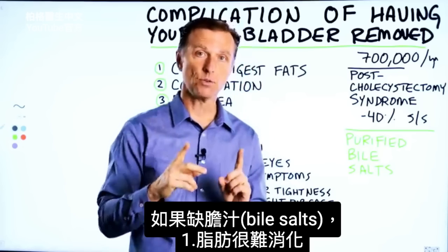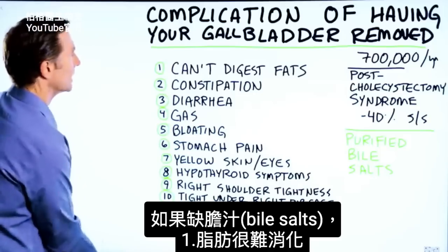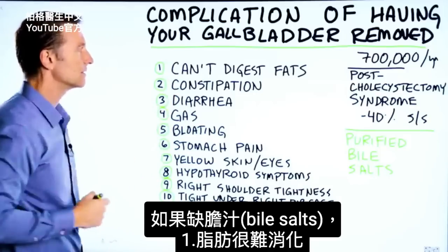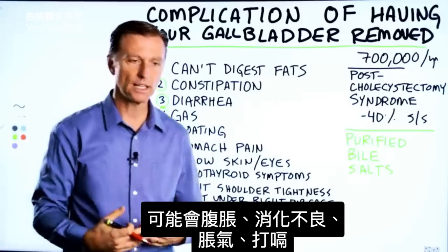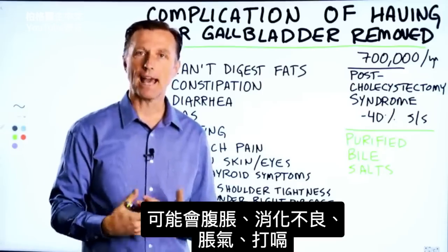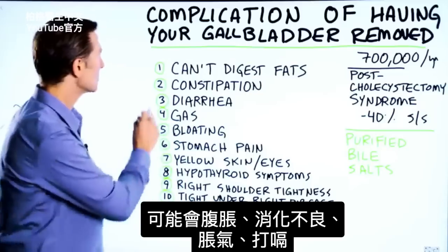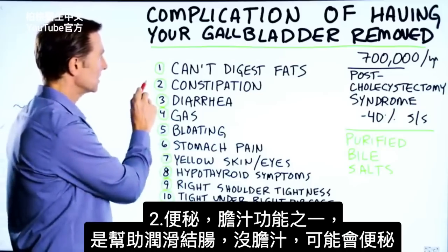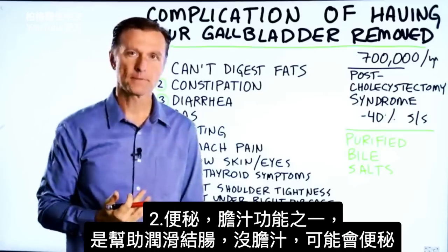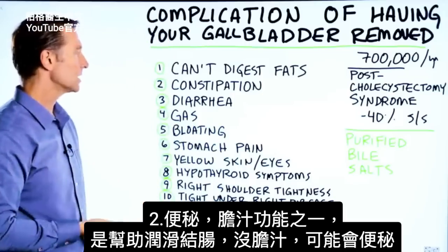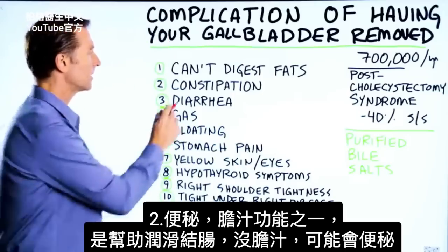So if you are deficient in bile salts, you're going to have difficulty digesting fats. You may experience bloating, indigestion, gas, and burping. Number two is constipation. One of the functions of bile is to help lubricate the colon, and without bile you may have constipation.